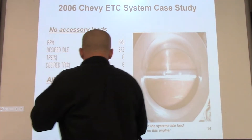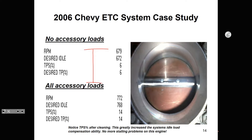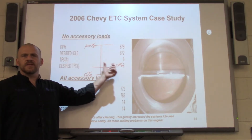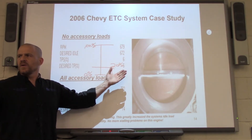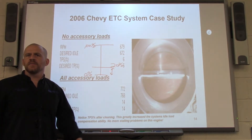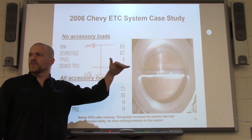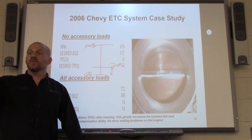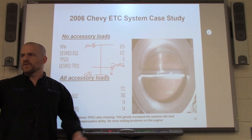If the computer system is limiting the ETC or TAC system to around 20% for all idle loads, you understand the parallel. What happens when we get around 20%? The computer's not giving you any more. You're going to end up with intermittent stalling problems because at times, accessory loads will be more than what the computer is going to give us for compensation, and the car will stall when it comes to stops — or you'll get false trouble codes.